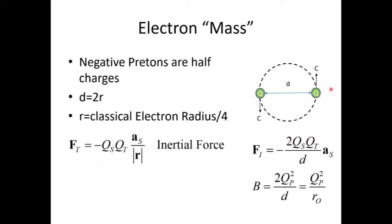The complete reactionary force to you trying to accelerate this system is twice the inertial force. This is two times the charge of each preton divided by the distance between them — that is the inertial force you're going to feel. Because force is F equals MA, the inertia B is equal to twice the preton charges squared divided by the distance between them. Or, if you use the orbital radius of the system RO, the inertia is just the preton charge squared divided by the orbital radius.